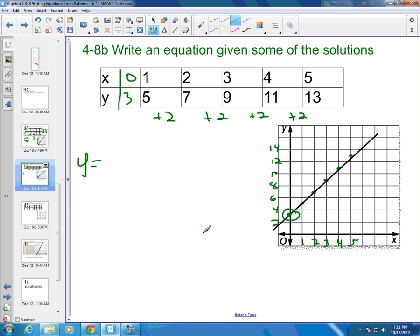So I'm starting at 3. I'm starting at 3, and then I'm adding 2 each time. So I added 2 one time. I added 2 two times. I added 2 one time whenever I was at 1. I added 2 two times when I was at 2. I added 2 three times when I went at the third one. So I'm adding 2 x times, which just means I'm multiplying.